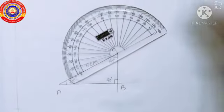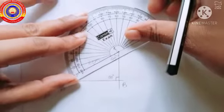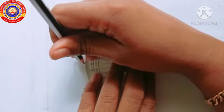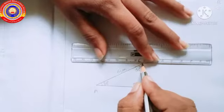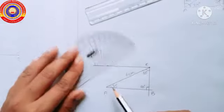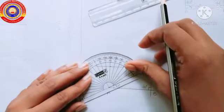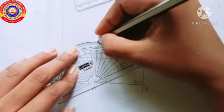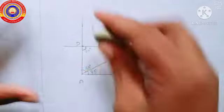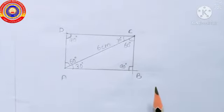On the other side of the diagonal, draw an angle of 30 degrees at point C, and another angle of 60 degrees at point A. Join these two points to get point D. Erase the unnecessary parts and we will get the required rectangle.